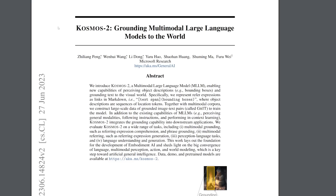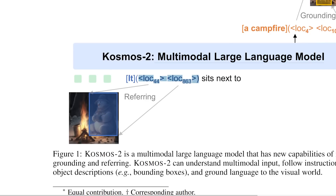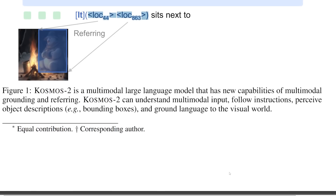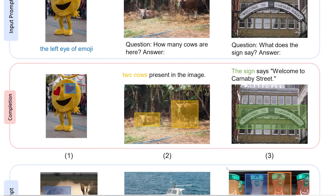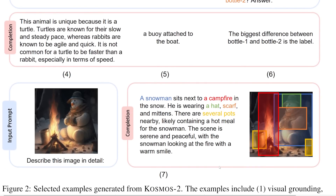Cosmos 2. This paper might be the big first steps towards the convergence of language, multimodal perception, action, and world modeling — which is definitely a key step towards artificial general intelligence. Cosmos 2 proposes a multimodal large language model with the ability to perceive object descriptions such as bounding boxes and ground text to the visual world. By having object descriptions as sequences of location tokens along with language tokens, it is capable of understanding multimodal input, following instructions, perceiving object descriptions, and grounding language to visuals. This research is definitely a big stepping stone towards the convergence of all these tasks.